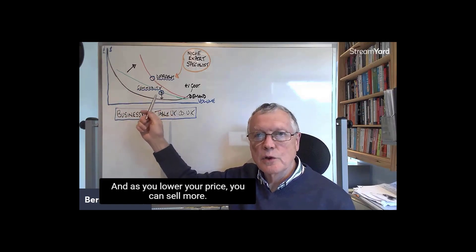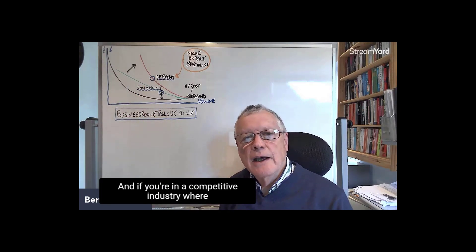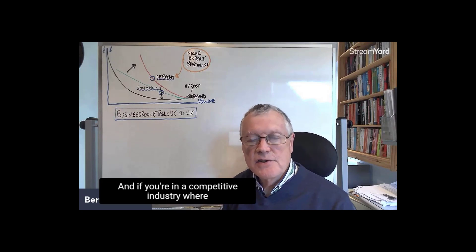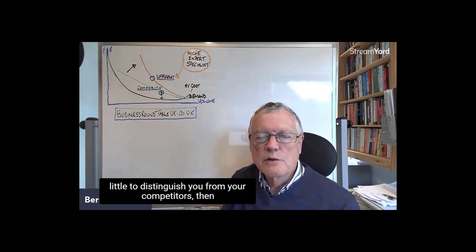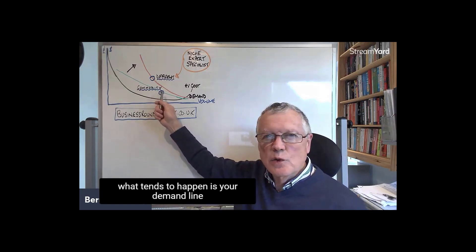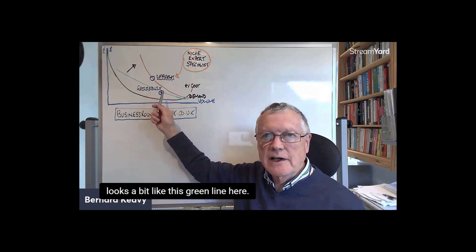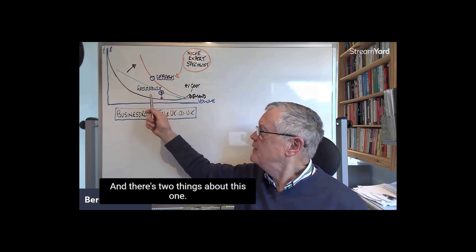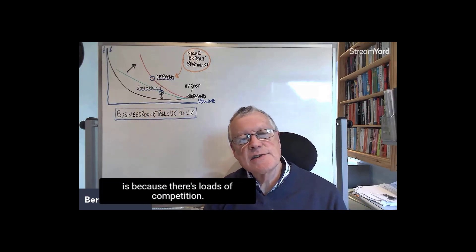As you lower your price you can sell more. If you're in a competitive industry where you're essentially a commodity — meaning there's very little to distinguish you from your competitors — your demand line looks like this green line here. It's quite low because loads of competition has driven prices down.